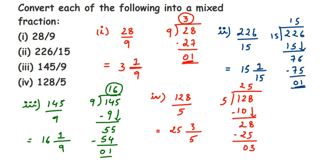That's how you convert an improper fraction into a mixed fraction. You can only convert improper fractions this way — divide, and the quotient becomes the whole number, the denominator stays the same, and the remainder becomes the numerator. I hope this is clear. If you have any questions or doubts, drop a comment. Thank you for watching!